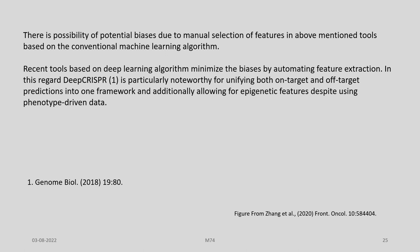There is a possibility of potential biases due to manual selection of features in the above-mentioned tools based on conventional machine learning algorithms. Recent tools based on deep learning algorithms minimize these biases by automating feature extraction. In this regard, Deep CRISPR is particularly noteworthy for unifying both on-target and off-target predictions into one framework and allowing for epigenetic features despite using phenotype-driven data. For further information, kindly consult the article in Genome Biology.